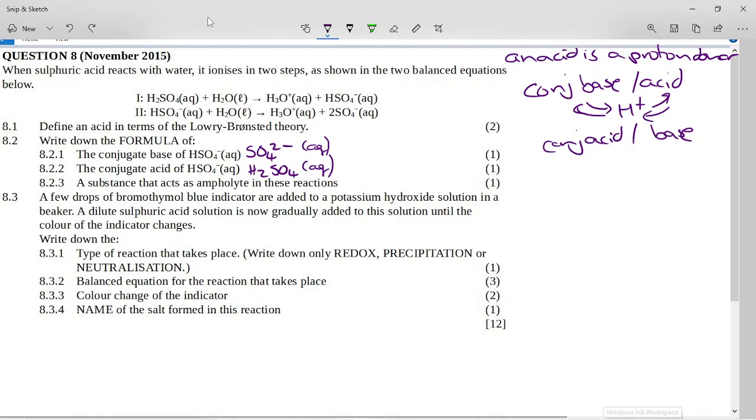So the thing that is the ampholyte here is this ion HSO4 minus which is in aqueous solution. Okay, because in one equation we've got this linkage where it is the conjugate base this side, and in this second equation this side it is an acid. So it's the ampholyte here.